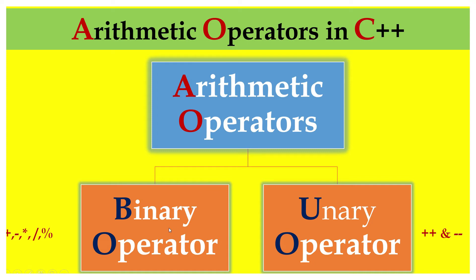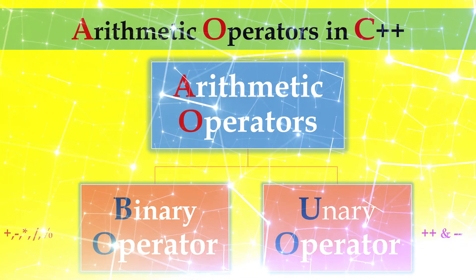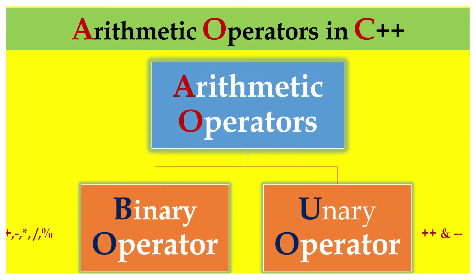Binary operators are the operators that are in need of two operands or two numbers to work. Since 'bi' means two. Addition, subtraction, multiplication, division and modulus are examples for binary operators. If you wish to use any of these operators, you are in need of at least two numbers. Using a single number, you cannot be able to use these operators.